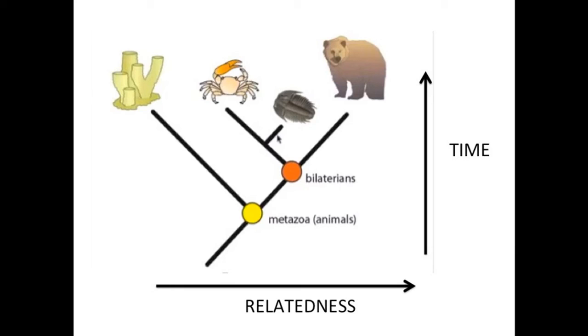and the past being at the bottom. So you can see, let's take for example the trilobite. Its branch does not extend all the way to the top or the present. That's because it's extinct. It's shorter, which shows that it's extinct.